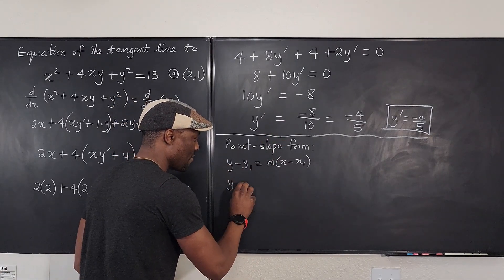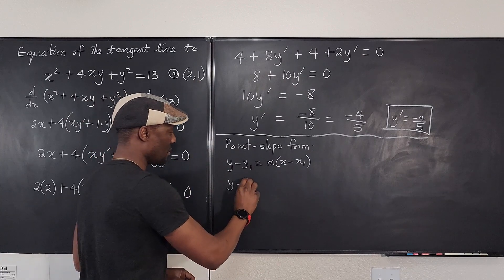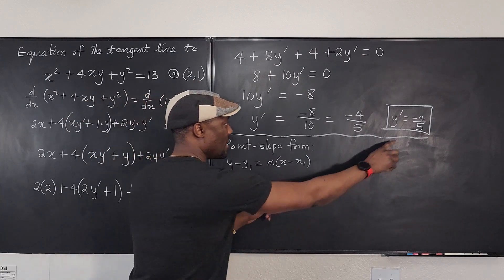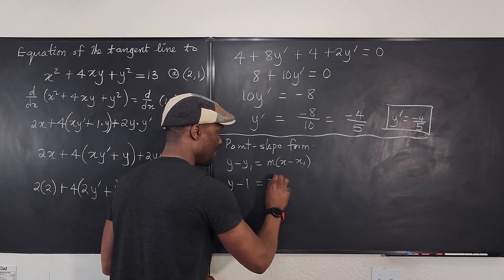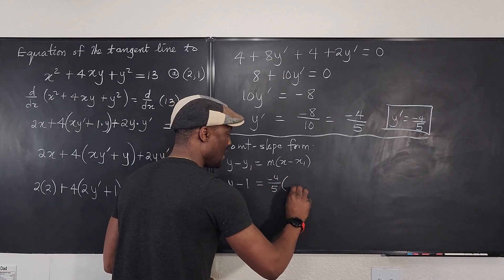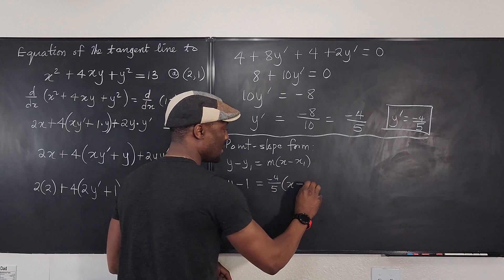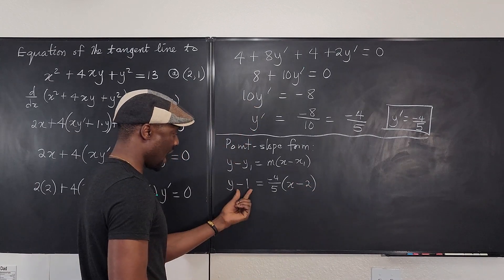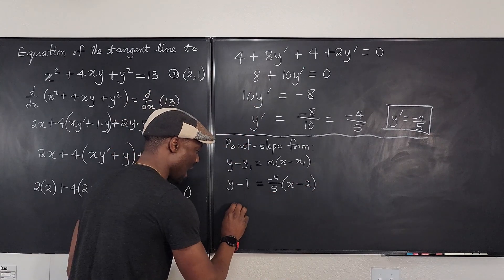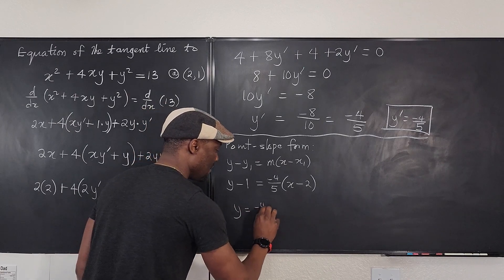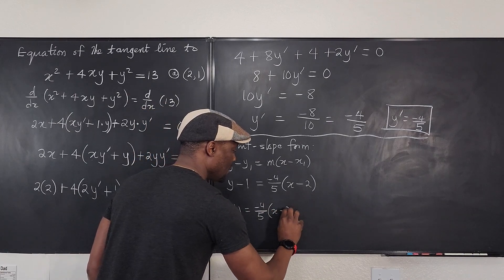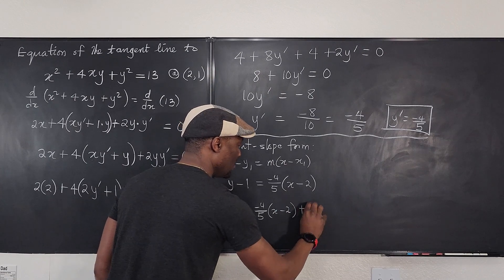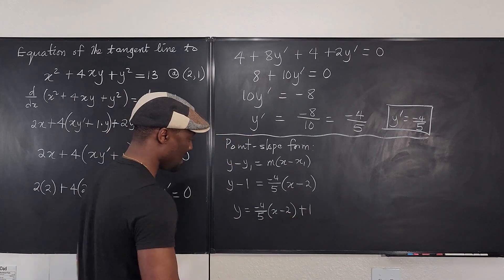So we have y minus, what's our y1? It's 1, equals m. This is the value we've got. That's negative 4 over 5 times our x minus, what's x1? It's 2. So I can move this one over here so that I have y is equal to negative 4 over 5 times x minus 2 plus 1. Now I can distribute this. This is going to be equal to, let's write it here.